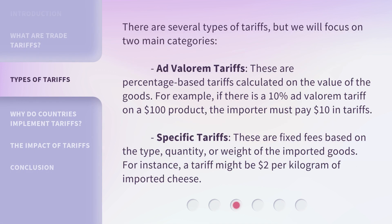The main goal is to increase the cost of imported items, which can protect domestic industries from foreign competition. By making imported goods more expensive, tariffs can encourage consumers to buy locally produced products. There are several types of tariffs, but we will focus on two main categories. Ad valorem tariffs: these are percentage-based tariffs calculated on the value of the goods. For example, if there is a 10% ad valorem tariff on a $100 product, the importer must pay $10 in tariffs.